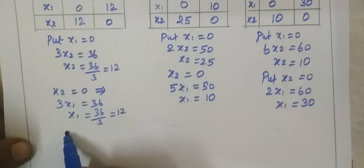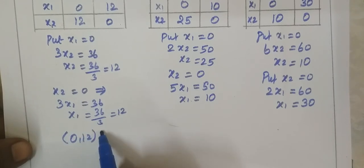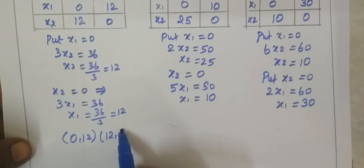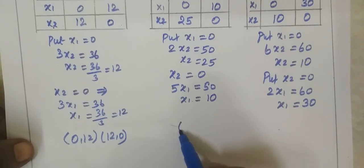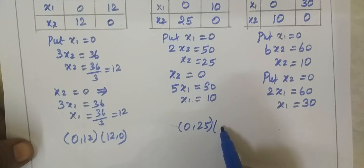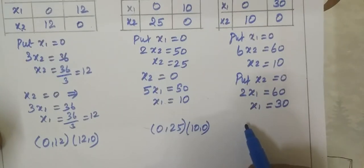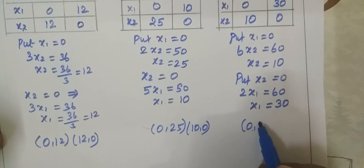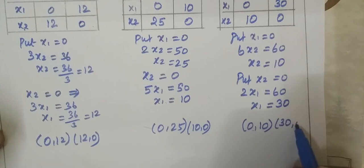The points for the first equation are (0, 12) and (12, 0). For the second equation, the points are (0, 25) and (10, 0). For the third equation, the x value is 0 with y2 equal to 30, and y2 equal to 30. Now we substitute these elements in the graph.